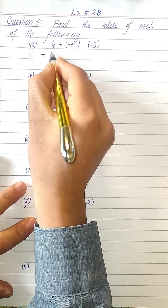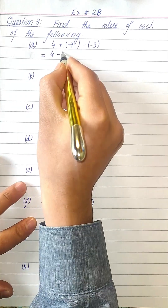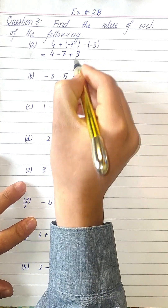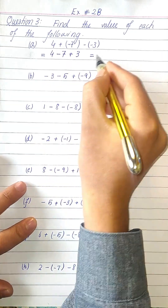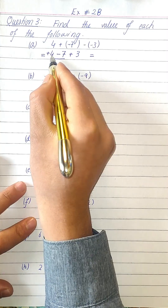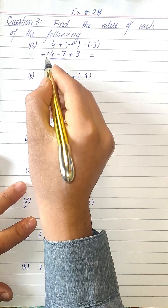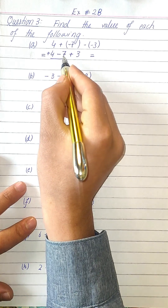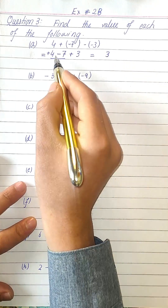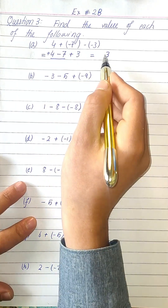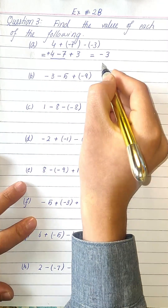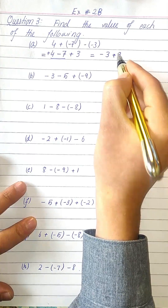In part a, we get: plus times minus will be minus seven, and then minus times minus will be plus three. We can now add these two values. Since four has a positive sign and seven has a negative sign, both values have different signs, so we subtract the smaller from the greater: seven minus four is three, and we write the sign of the greater value — seven is negative — so we get minus three, and plus three is written as it is.